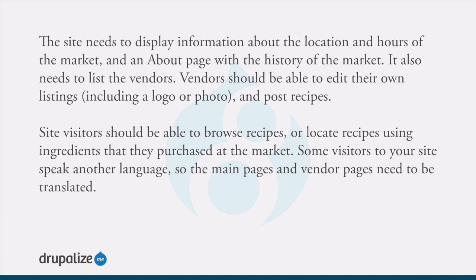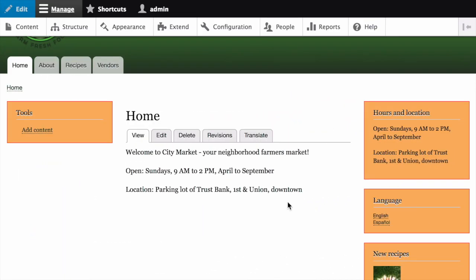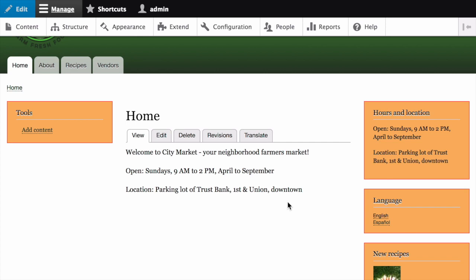As we start planning, for each identified piece of content, decide which content entity type would be the best fit. You'll need to consider where and how the content will be used and edited on the site. For example, in the farmer's market site scenario, you might want to display the hours and location of the farmer's market on the sidebar of every page — for that content, a single custom block makes sense.